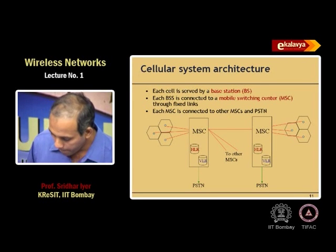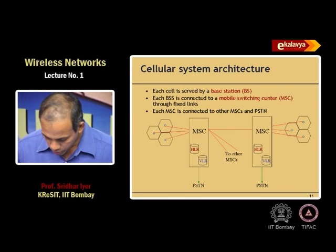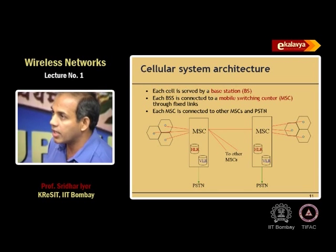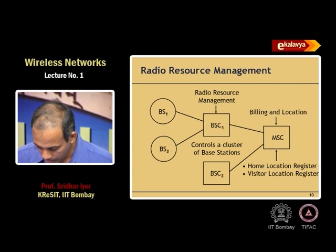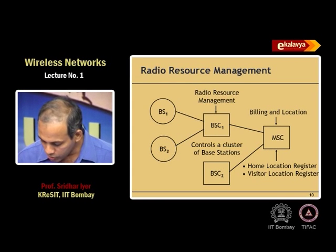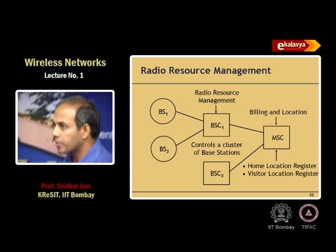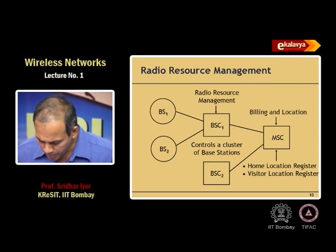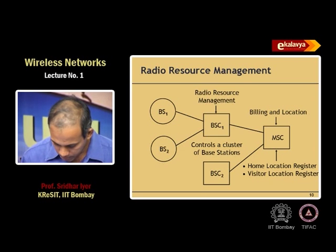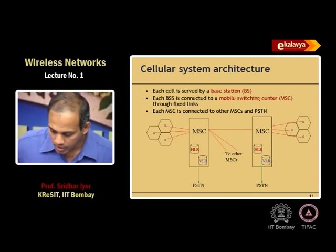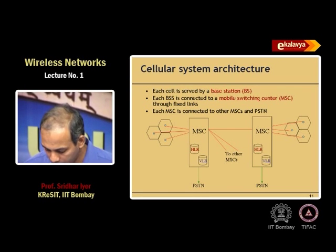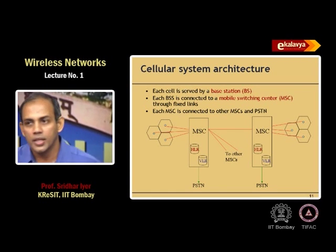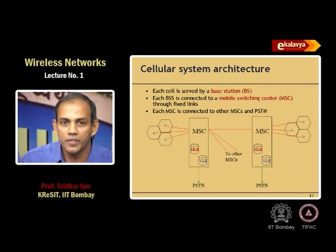In the GSM architecture diagram, the MSC talks to the Home Location Register (HLR) and the Visitor Location Register (VLR) for location management. The HLR stores authentication information, subscribed services, and roaming status. Multiple MSCs are interconnected, and a Gateway MSC connects to PSTN and other cellular networks.